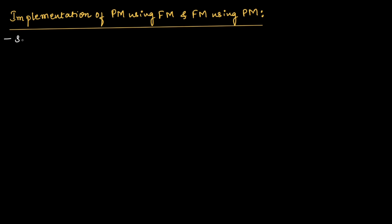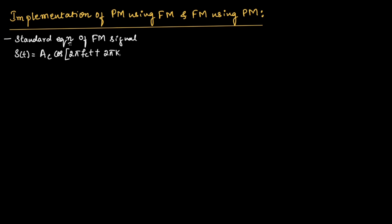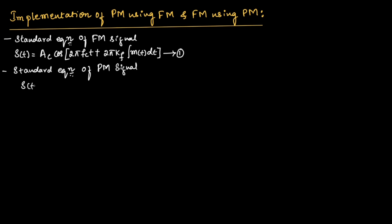We know the standard equation of FM signal can be given as S(t) = AC cos(2π·FC·t + 2π·KF·∫M(t)dt). Let us call this equation number 1. Similarly, the standard equation of the PM signal can be given as S(t) = AC cos(2π·FC·t + KP·M(t)).